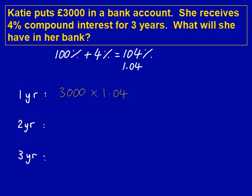We start with £3,000 and multiply it by 1.04, our decimal. We can type this in on a calculator. This gives us the answer of £3,120. So, after 1 year we have £3,120 in the bank.